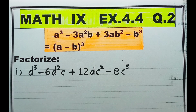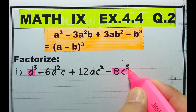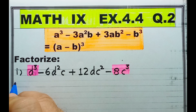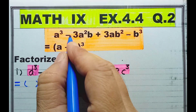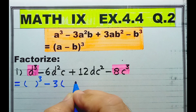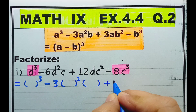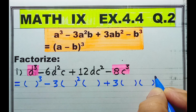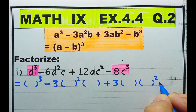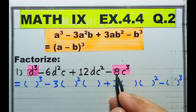So let's start factorizing part one. Look, this is a cubed and this is b cubed. Toh, aayye, formulae ko follow karte hain. A cubed, minus 3 a squared b, plus 3 a b squared, minus b cubed. Yaad rahe, this is a cubed and this is b cubed.